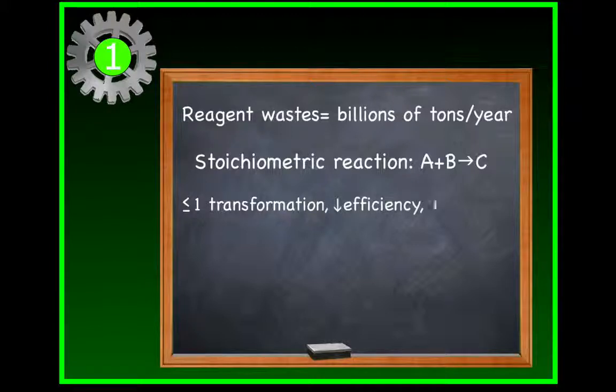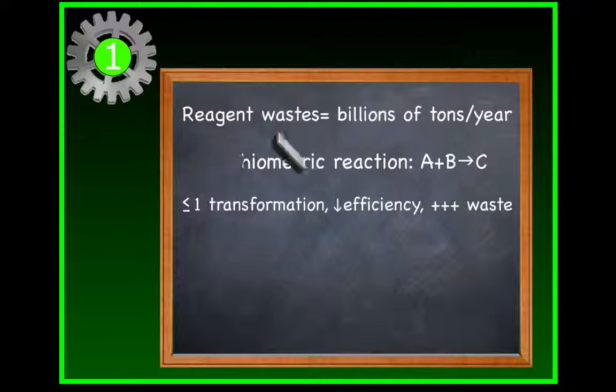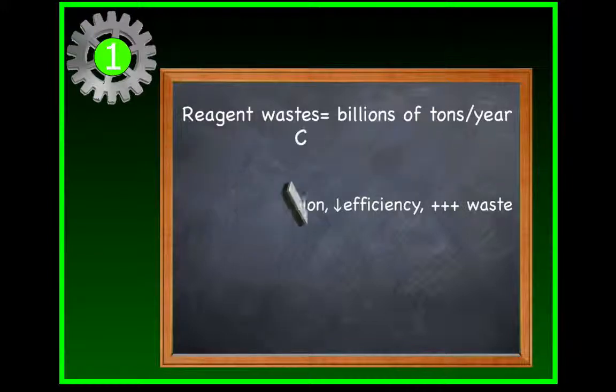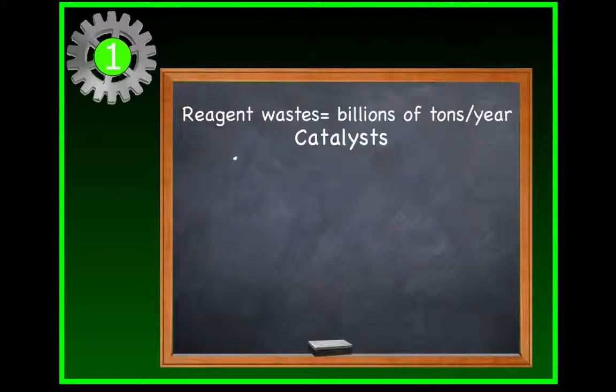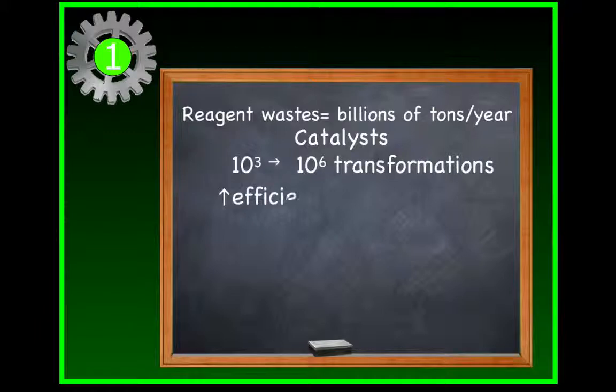These reagents can carry out no more than one chemical transformation before they're no longer useful. And when they have to be used in excess, which is often the case, then an enormous amount of waste results. Fortunately, there are far more efficient alternatives: catalysts. Catalysts can carry out thousands, sometimes even millions of transformations before they're destroyed. And that greatly reduces waste.